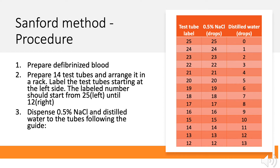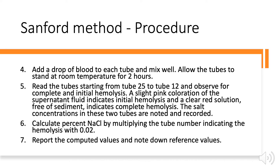For the Sanford method, first prepare your defibrinized blood. Then prepare 14 test tubes arranged in a rack, labeled starting from the left with the number 25 and going down to number 12. Dispense 0.5% NaCl and distilled water through the tubes following the guide on this slide. Add a drop of blood to each tube and mix well. Allow the tubes to stand at room temperature for at least two hours. Then read the tubes from tube 25 to the last tube and observe for complete and initial hemolysis. A slight pink coloration of the supernatant fluid indicates initial hemolysis, and a clear red solution free of sediment indicates complete hemolysis. Note and record the salt concentrations in these two tubes.